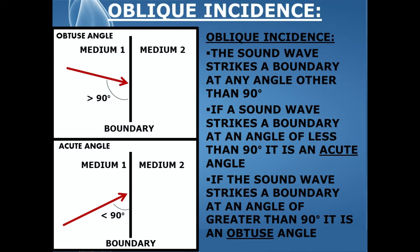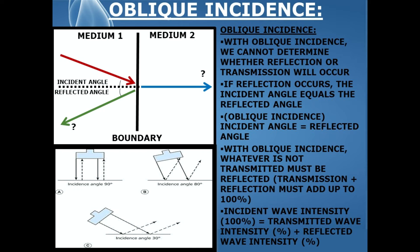In the bottom diagram, the sound wave — the red arrow — is striking the boundary at an angle of less than 90 degrees. This is known as an acute oblique incident angle. It's important to note that with oblique incidence, we cannot determine whether reflection or transmission will occur.